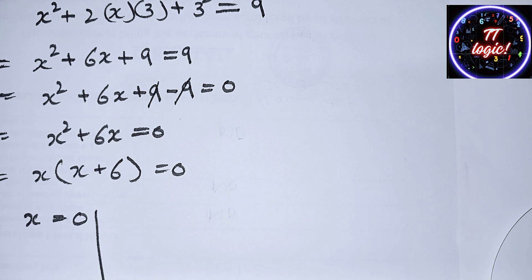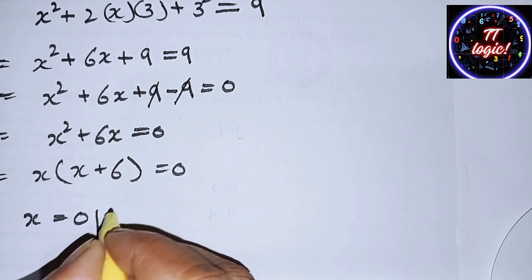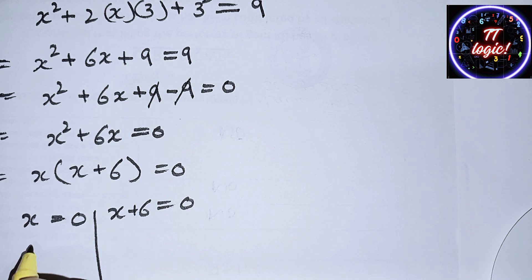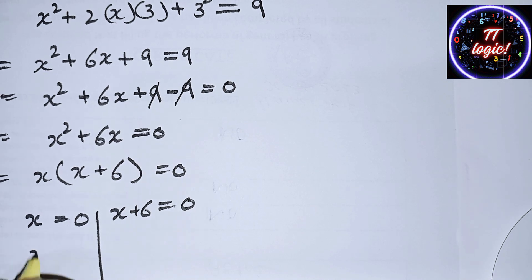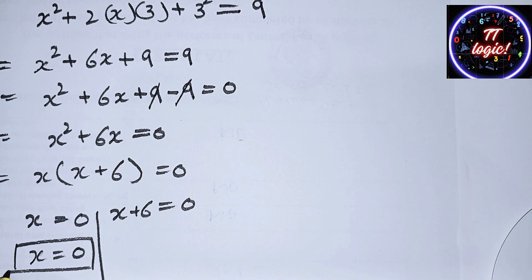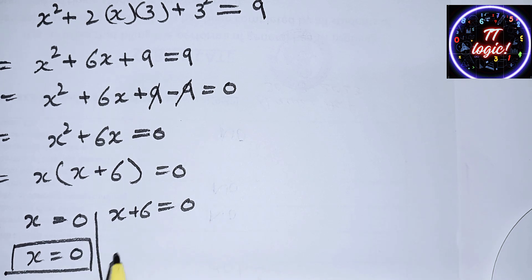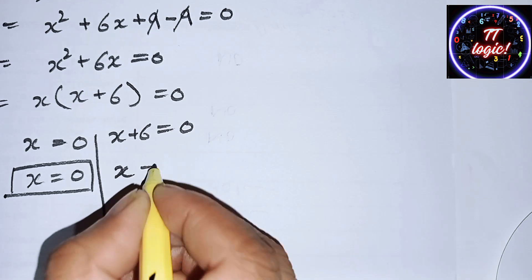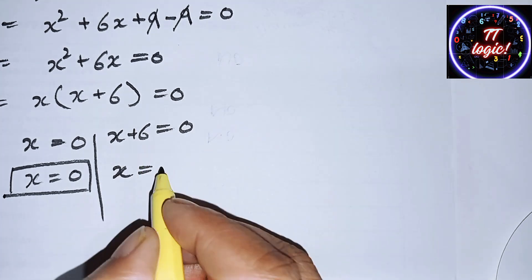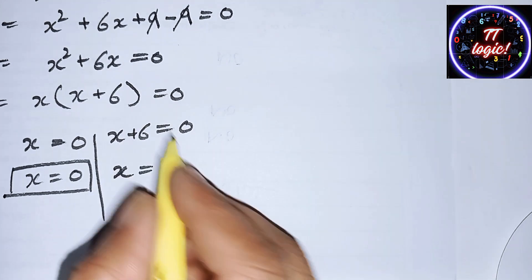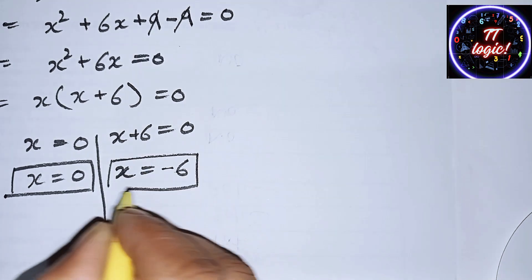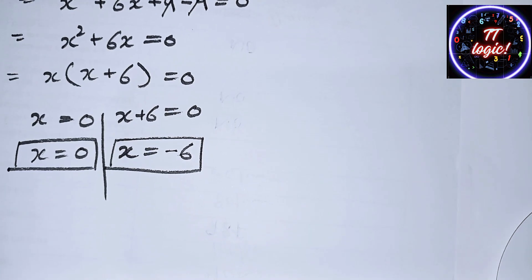From x(x + 6) = 0, we get two equations. The first equation gives x = 0, and the second equation is x + 6 = 0, which gives x = −6. So the first value of x is 0 and the second value of x is −6.